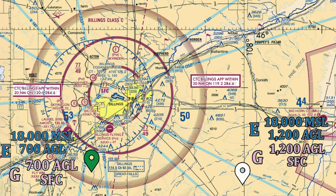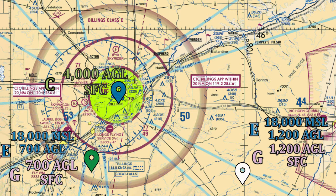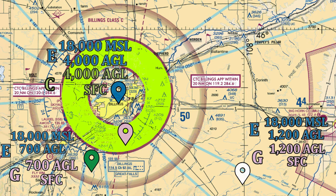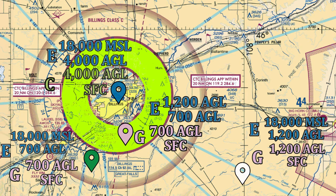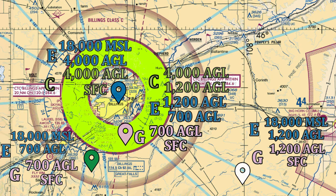It gets interesting inside of Class Charlie airspace. In the center, we have Class Charlie going from the surface up to 4,000 feet AGL. In the outer circle, Class G still goes from the surface up to 700 feet AGL, then Class Echo from 700 feet AGL up to 1,200 feet AGL — that's where Class Charlie starts, going 1,200 feet AGL up to 4,000 feet AGL. Then above 4,000 feet, Class Echo goes up to 18,000 feet MSL.